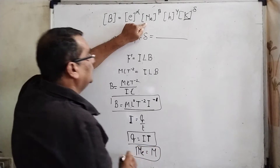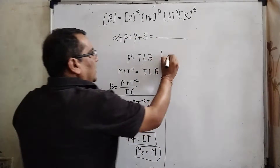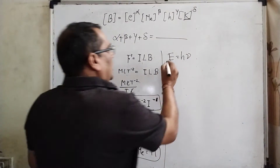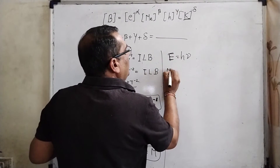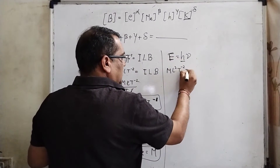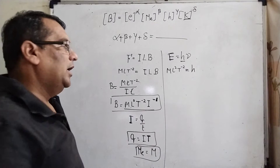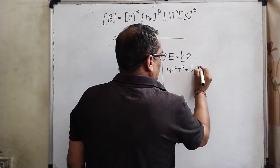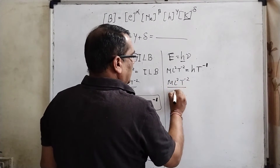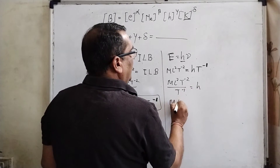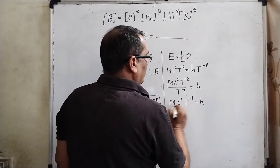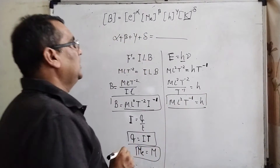Mass mₑ is a fundamental unit, so [mₑ] = M. For Planck's constant h, we use E = hν. Energy has dimensions M L² T⁻², and frequency has dimensions T⁻¹. So [h] = M L² T⁻² / T⁻¹ = M L² T⁻¹.